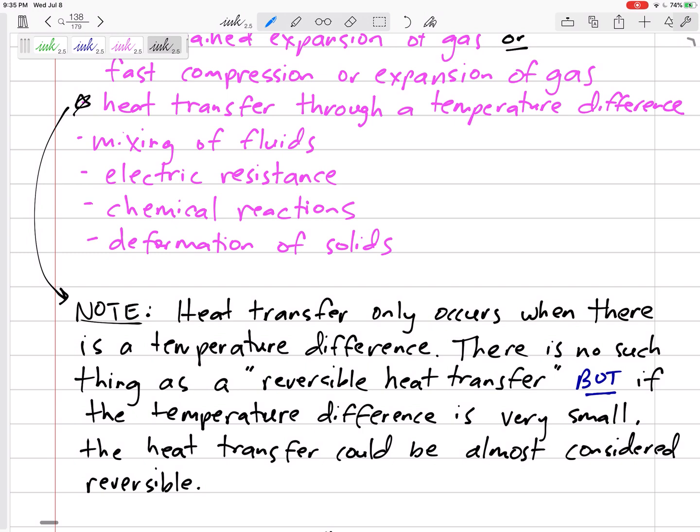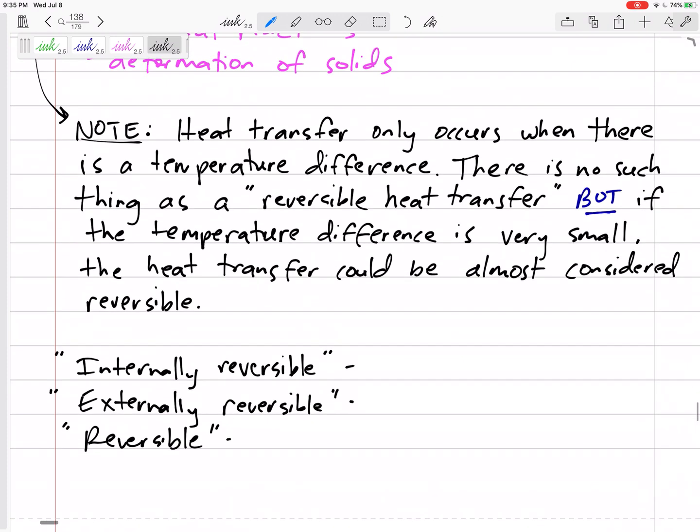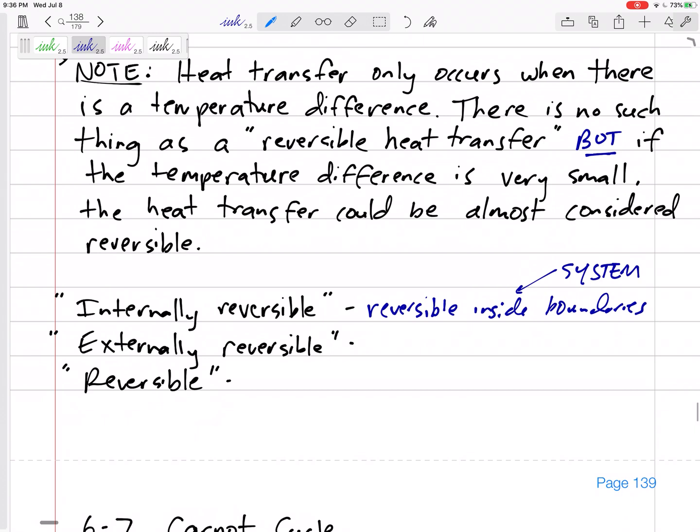Some things could be internally reversible or externally reversible or actually reversible. Internally reversible is reversible inside the boundaries, so this is the system. Our product or object is reversible. Externally reversible is reversible outside the boundaries, the surroundings.